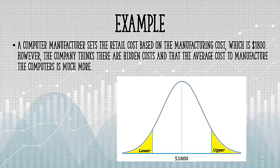Next, we want to figure out what kind of test this is, using the information. The question is, what are we testing here? The clue is in that last sentence. The company thinks the cost to manufacture is much more. In other words, they think the cost is greater than. That's our alternate hypothesis, the one we're testing.